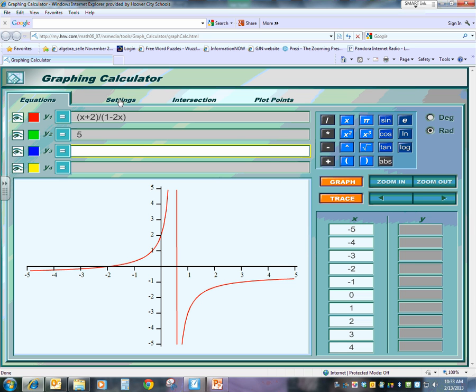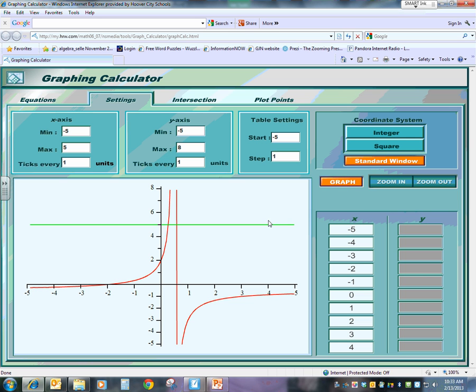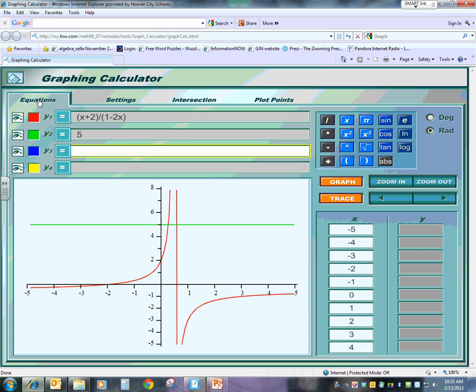My window doesn't appear to be big enough. Let's make my y-axis go a little bit higher here. So I hit graph, and it's still not coming out. So I might have to start all over again. Figure out what's going on. Oh, there it came up.